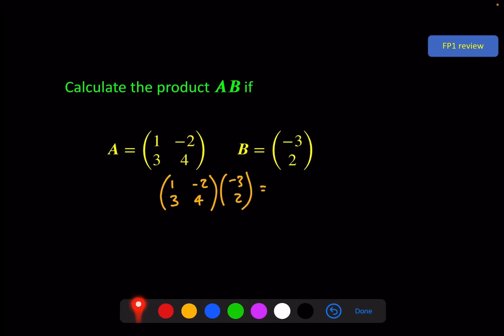We do first row times first column: minus 3 and minus 4, that gives us minus 7. Then there isn't a second column, so we go to second row, first column: minus 9 plus 8 gives us minus 1. And that is our answer matrix.